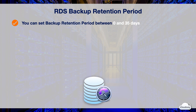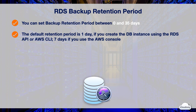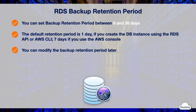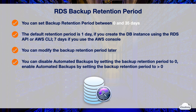When you create a DB instance, you can set the backup retention period to between 0 and 35 days. If you don't set the backup retention period, the default is 1 day if you create the DB instance using the RDS API or the AWS CLI. The default backup retention period is 7 days if you create the DB instance using the AWS console. After you create a DB instance, you can modify the backup retention period. You can disable automated backups by setting the backup retention period to 0, for example while loading large amounts of data. You can re-enable automated backups by setting the backup retention period to a positive non-zero value, for example 1 day.